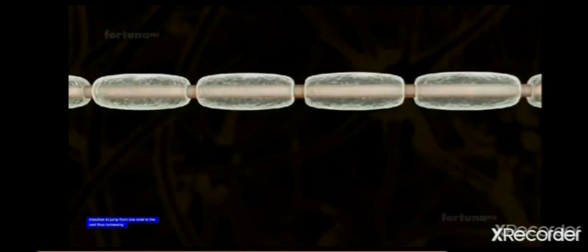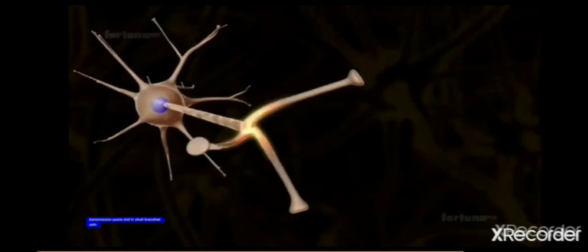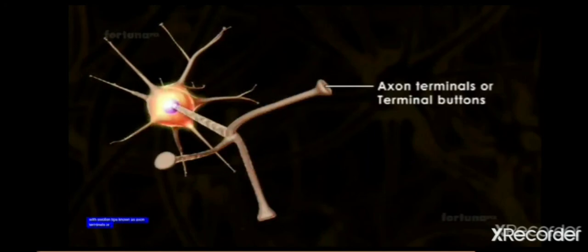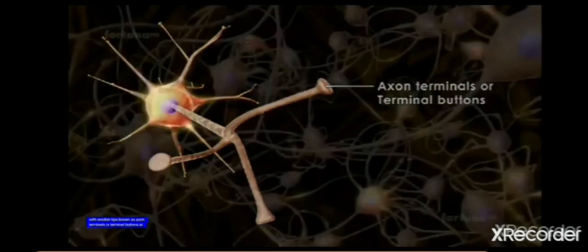Axon carries the nerve impulses in the form of electric signals. The endings of the axons are known as axon terminals or terminal buttons.